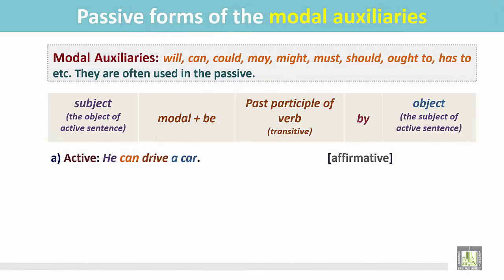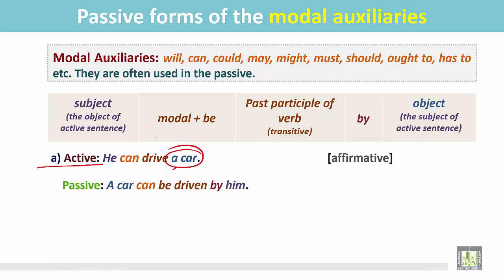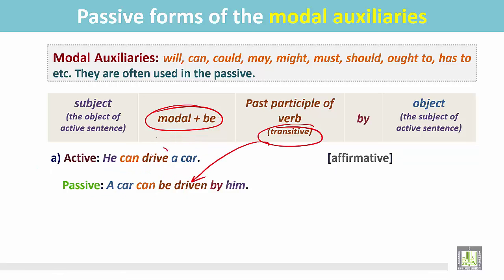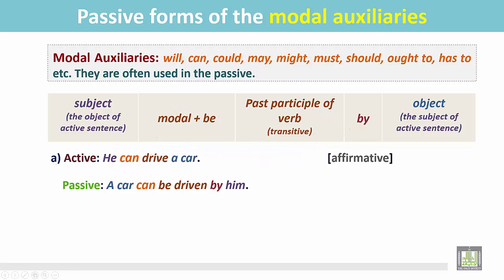See the examples. This is an active sentence in the affirmative form: 'He can drive a car.' A car is the object of the verb 'drive.' So we can change this active sentence into passive. In the passive sentence, the object becomes the subject: 'a car.' Then according to the structure, we put modal 'can' and 'be,' then the verb in past participle form: 'driven,' by the preposition, and the subject becomes the object: 'him.' A car can be driven by him.